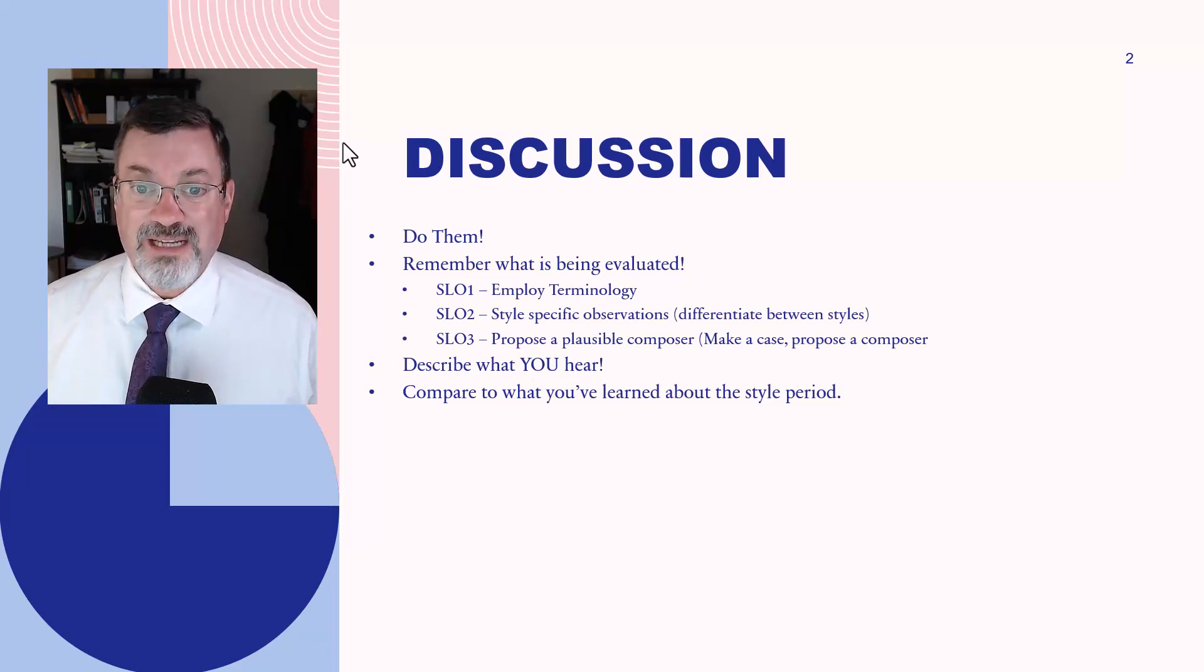So, SLO 2 is style-specific observations. In your discussion posts, especially if you hear something that you know is related to the style period of that module, mention it. Mention this is a facet of the Romantic period, which is Module 5. Or mention the larger orchestration, the larger forces involved, the larger symphony. There's more players on the stage.